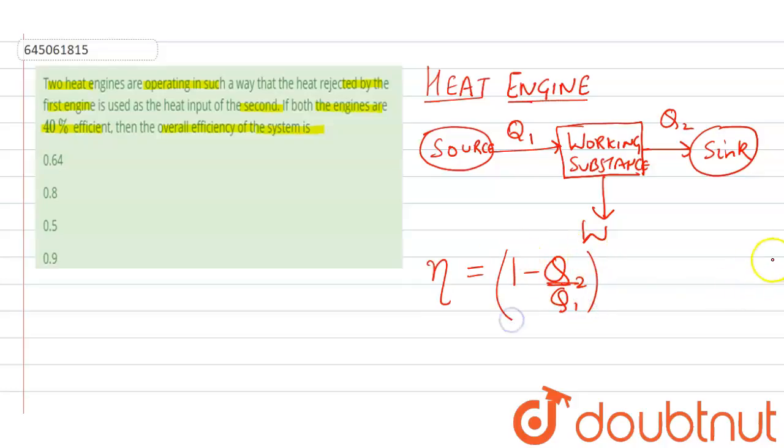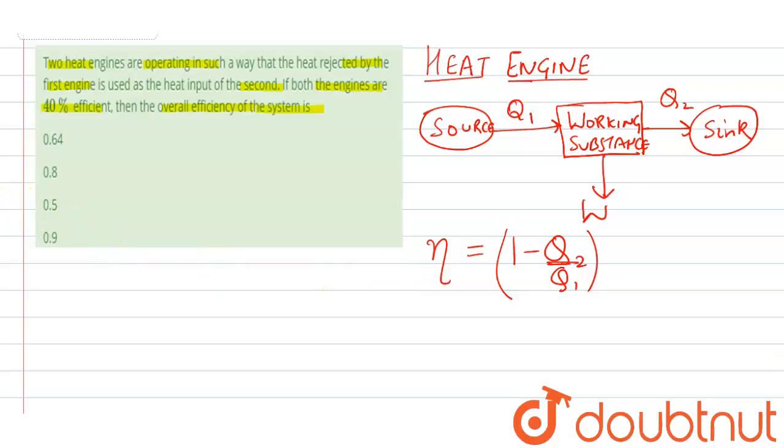So we can write here as equation 1. Efficiency is given in the first case, that is 40 percent efficient. So it will be 40/100 = 1 - Q₂/Q₁, or you can say Q₂/Q₁ will be equal to 60/100.